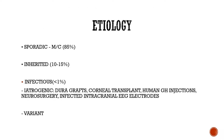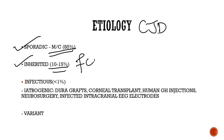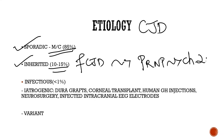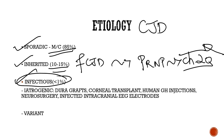Regarding the etiology of CJD: the most common type is sporadic CJD, and the second most common is familial CJD. Importantly, the gene for prion proteins is encoded on chromosome 20 — this is a very important MCQ question. The least common types are the infectious forms of CJD.